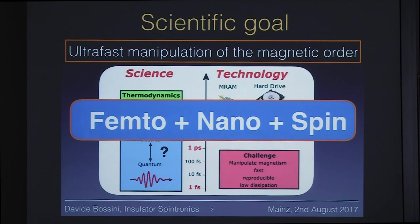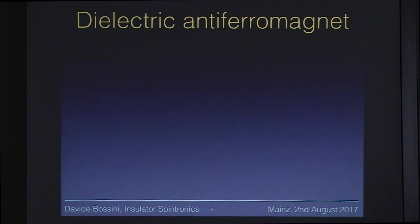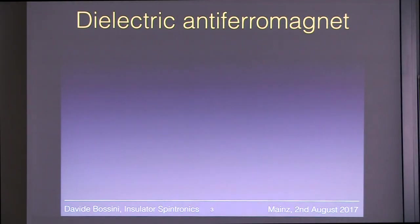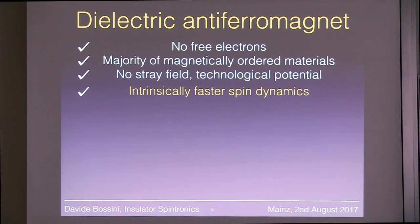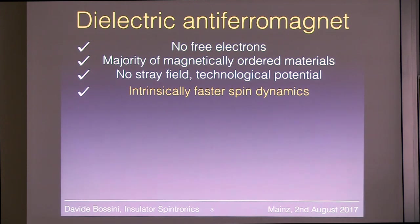To achieve such an ambitious goal, you have to choose the proper material. We believe the proper material is a dielectric antiferromagnet. We want to work with an insulating material, because if you have a metal, you have free electrons. When you shine light on a metal, you excite the free electrons, and these hot electrons give rise to a lot of interactions between electrons, the lattice, and spins, which complicates the description of spin dynamics. Moreover, free electrons absorb light, causing energy dissipation that we are trying to avoid.